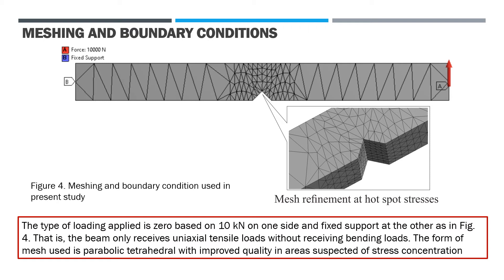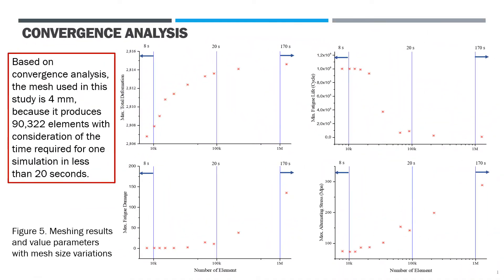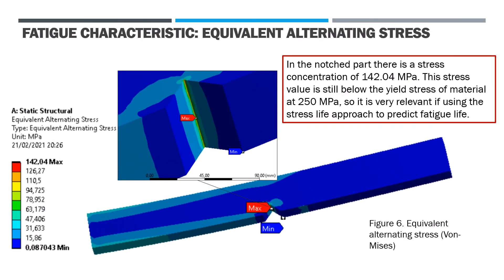The form of mesh used is parabolic tetrahedral with improved quality in areas suspected of stress concentration. Based on convergence analysis, the mesh size used in this study is 4 mm, because it produces 90,322 elements with the consideration that the time required for one simulation is less than 20 seconds. In the notch area, there is a stress concentration of 142.04 MPa. The stress value is still below the yield stress of the material at 250 MPa, so it is very relevant to use the stress-life approach to predict fatigue life.